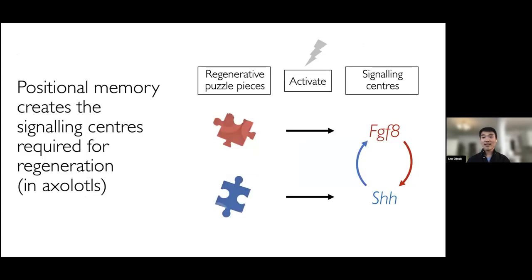So far, what I've told you is that the axolotl limb harbors at least two types of jigsaw puzzle piece — red and blue — that after injury will go on to activate different signaling centers, FGF8 and sonic hedgehog, that together drive regeneration. But this opens up very interesting questions. For example, the ultimate source of positional memory — the thing that makes red and blue cells different from each other in the context of the uninjured limb — actually remains unknown, and that's the first question I'd like to address in this talk.